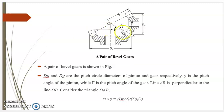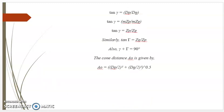Line AB is perpendicular to OB. Considering triangle OAB, tan(gamma) equals AB divided by OB, which equals (DP/2) divided by (DG/2). Therefore tan(gamma) equals DP divided by DG, which equals MZP divided by MZG. Therefore tan(gamma) equals ZP divided by ZG. Similarly, tan(Gamma) equals ZG divided by ZP. Also, small gamma plus large Gamma equals 90 degrees. Therefore the cone distance A0 equals the square root of (DP/2)² plus (DG/2)².